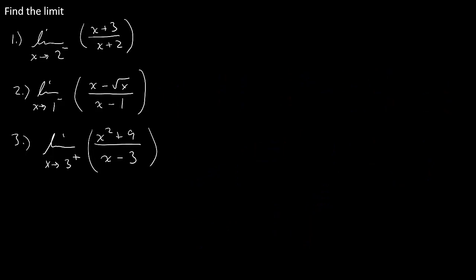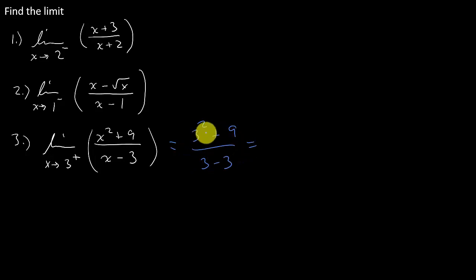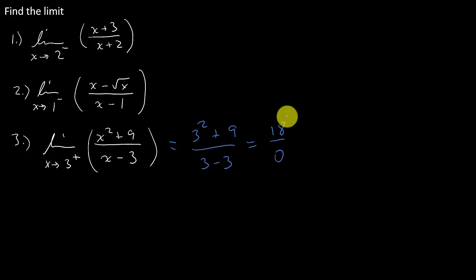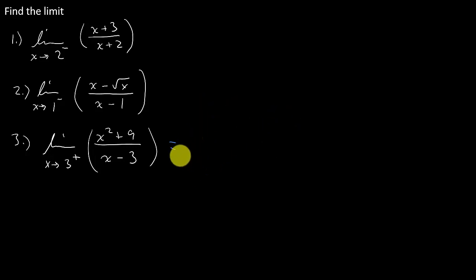For number 3, let's plug the 3 in. I'm going to get 3 squared plus 9 over 3 minus 3, which gives me 18 over 0. We know when we have 0 in the denominator that's undefined. We don't have 0 over 0, so this limit does not exist. But let's not just put does not exist — I want to know, does it go to infinity or does it go to negative infinity? What does this function do as it's approaching 3 from the right?